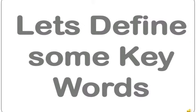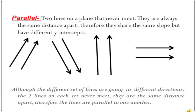First, let's define some key words. Parallel means two lines on a plane that never meet — they are always the same distance apart. Therefore, they share the same slope but have different y-intercepts.